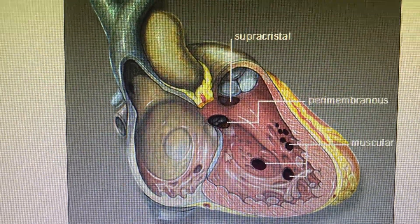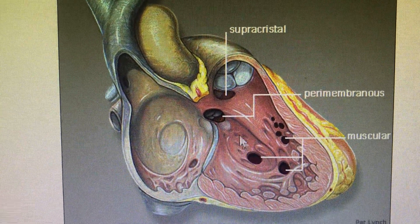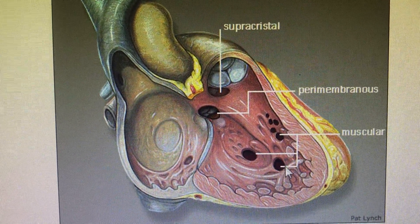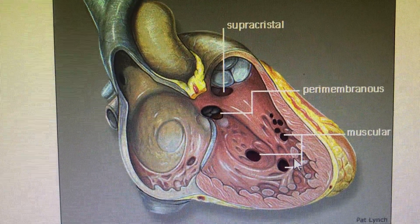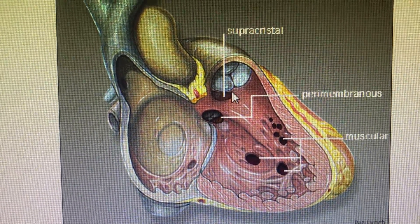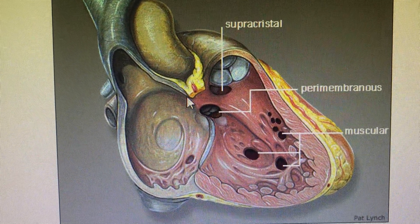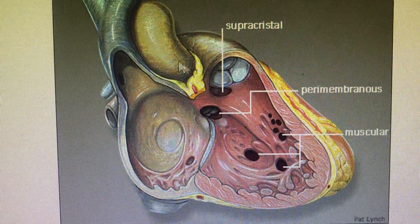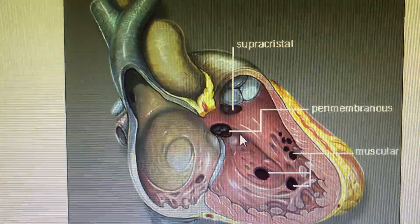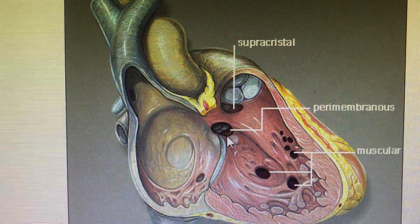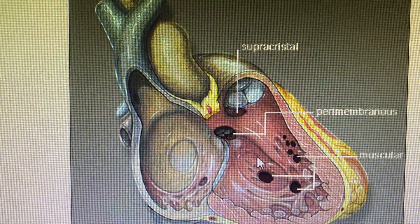There is an atrioventricular septal defect at the junction of the atrioventricular septum and the ventricular septum. There are muscular ventricular septal defects at the muscular septum, and there may be multiple such defects anywhere along it. There is also a perimembranous defect — the perimembranous membrane connects the muscular septum to the conus trunk formation in the embryo. The perimembranous VSD is the most common type; a subaortic VSD is also found in the perimembranous septum.